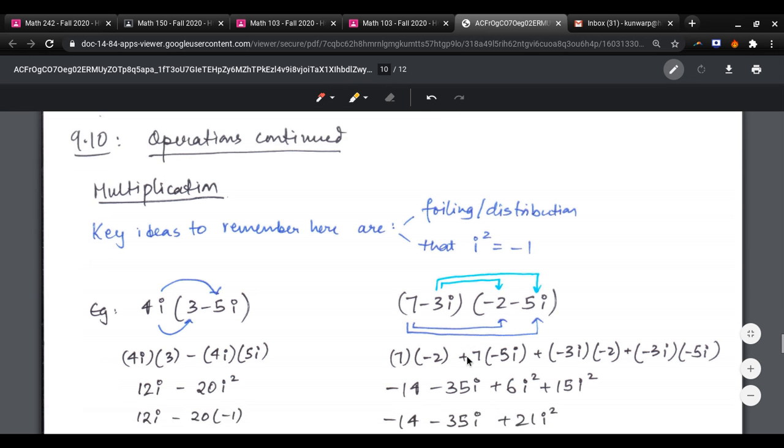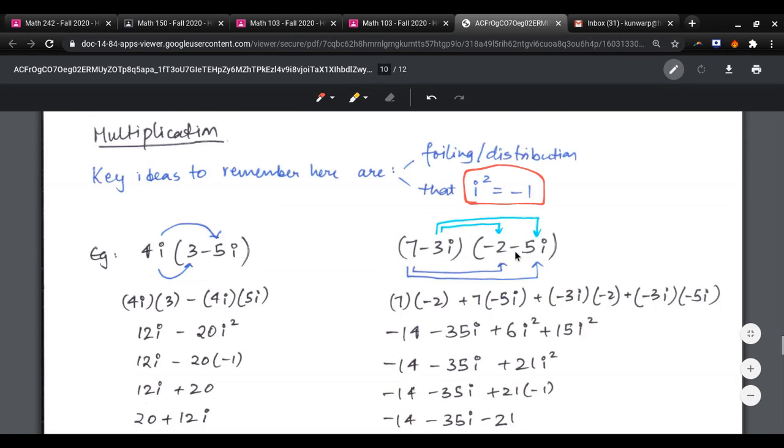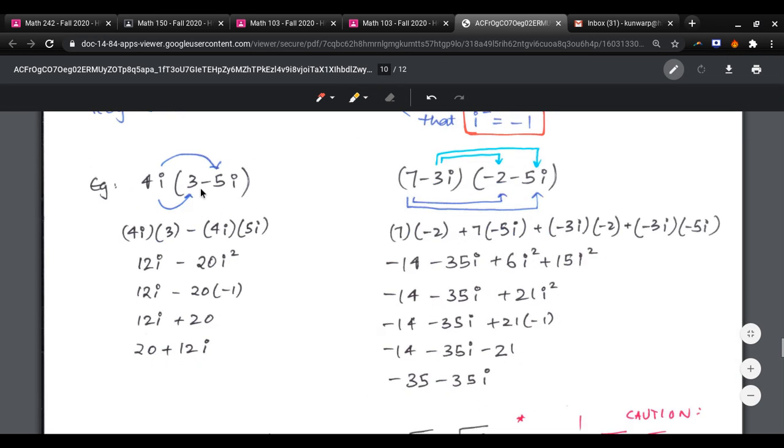Multiplication. There are two things to remember when you multiply them. First is the idea of foiling or distribution. And second is the fact that i squared actually has a real value, it has a numerical value of negative 1. Example, 4i times 3 minus 5i gives you 4i times 3 minus 4i times 5i. That's 12i minus 20i squared, 12i minus 20 times negative 1, 12i plus 20, 20 plus 12i.